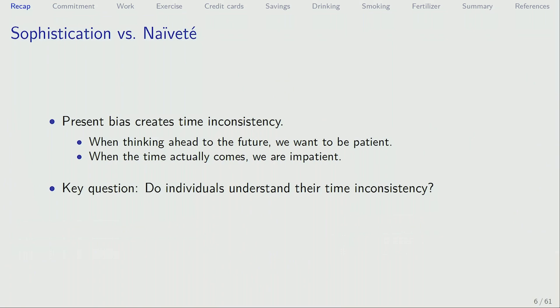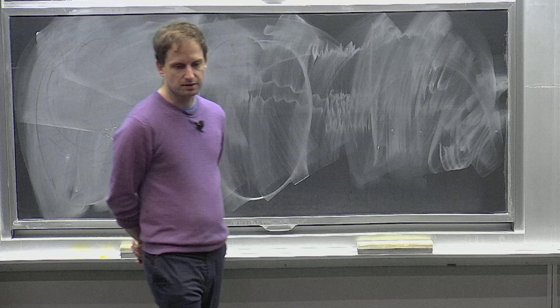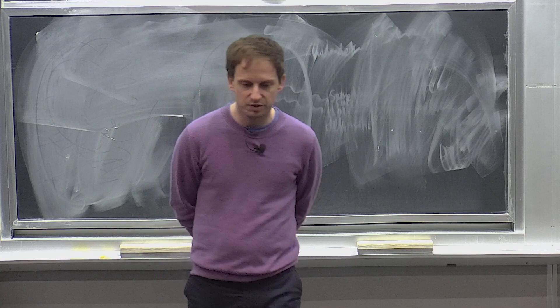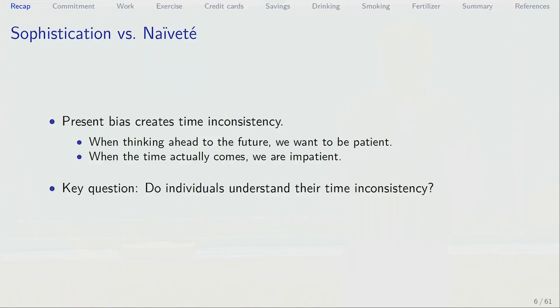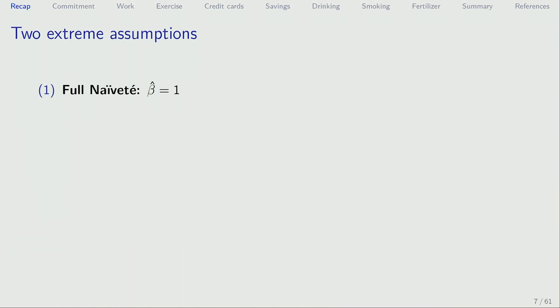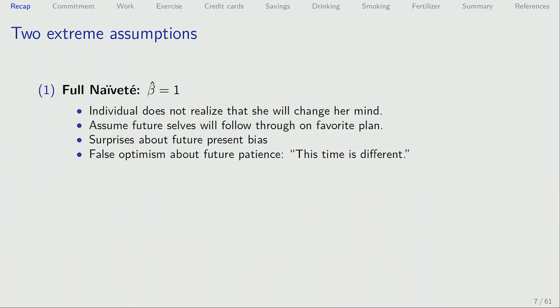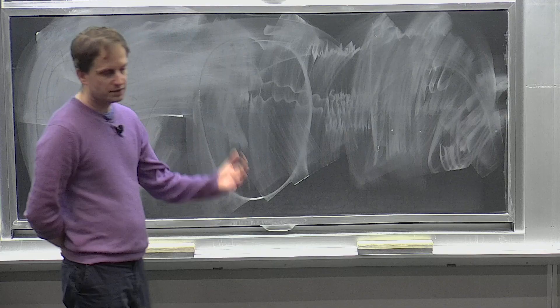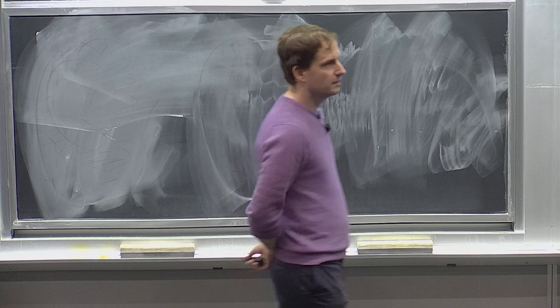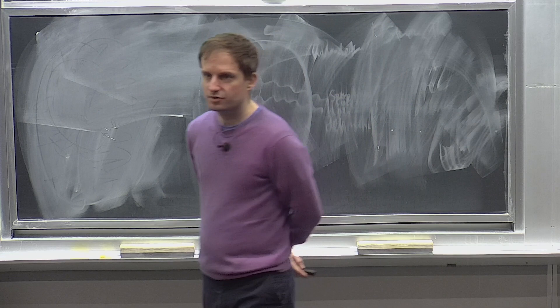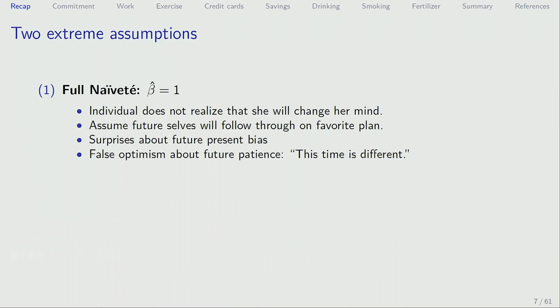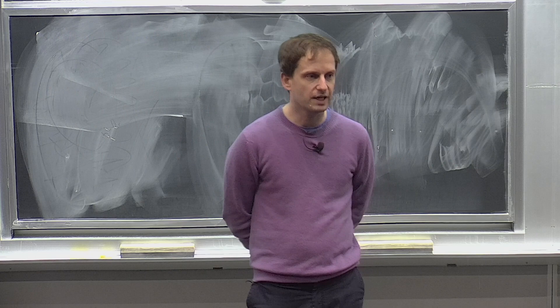We talked about sophistication versus naivete. Present bias creates time inconsistency — when thinking about the future, we want to be patient, but when the future actually arrives, we are impatient. The key question is: do people understand their time inconsistency? We discussed two extreme assumptions. One is full naivete — the person does not realize that she will change her mind. She thinks she's going to follow through on her plan, but then the future arrives and she is surprised by her own present bias. There's false optimism about future patience, and the person might say, 'this time is different.'